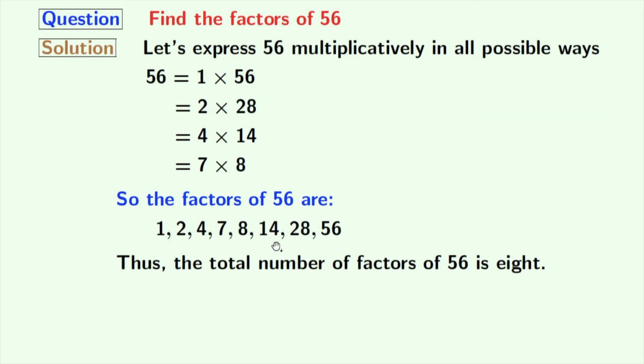Now, if we look at these factors, we can see that among these factors 2 and 7 are prime numbers because these two numbers do not have any divisor other than 1 and that number itself. So, we can easily say that the prime factors of 56 are 2 and 7.